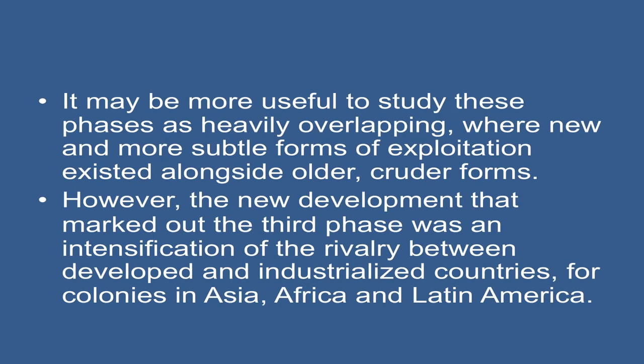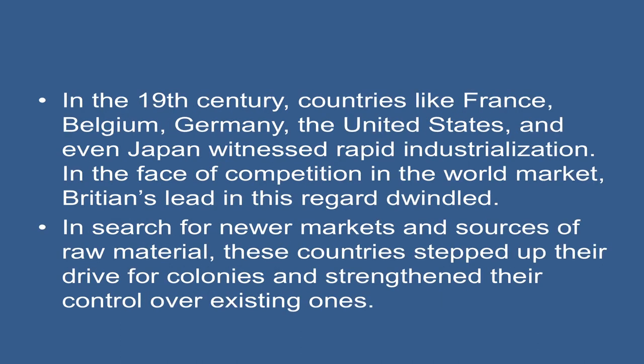It may be more useful to study these phases as heavily overlapping, where new and more subtle forms of exploitation existed alongside older, cruder forms. The new development that marked out the third phase was an intensification of rivalry between developed and industrialized countries for colonies in Asia, Africa, and Latin America. In the 19th century, countries like France, Belgium, Germany, the United States, and even Japan witnessed rapid industrialization.